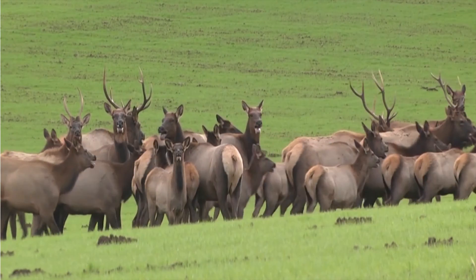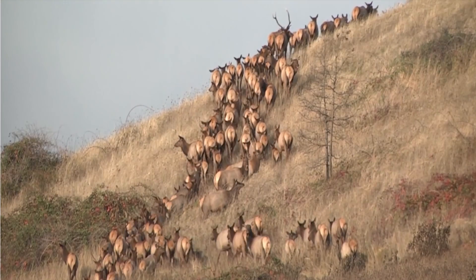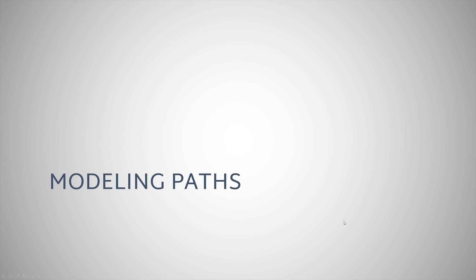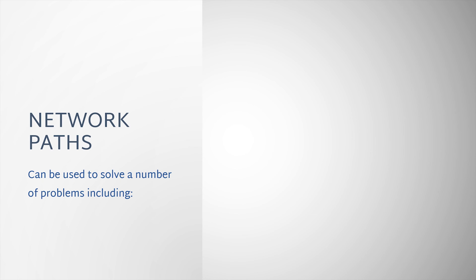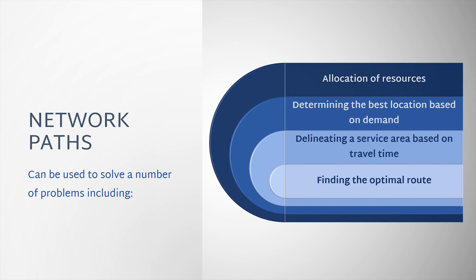Overland Paths model movement or routes through places with no infrastructure or systematic constraints. In this module, we will cover the elements that make up a Network Path model. Network Paths can be used to solve a number of problems including the allocation of resources, determining the best location based on demand, delineating a service area based on travel time, and finding the optimal route.